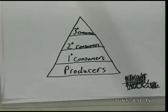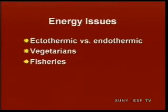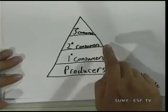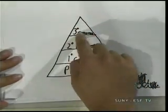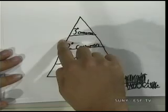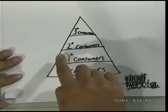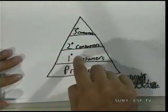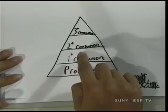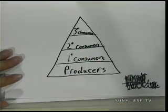Another energy issue is fisheries. Fisheries have gone through big changes over the years. Initially we were fishing very high on the food chain, but those fish have disappeared. We've continued to fish down the food chain to reach smaller but more populous fish lower in the pyramid.